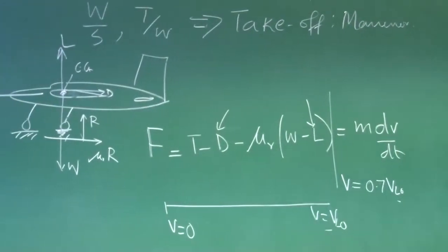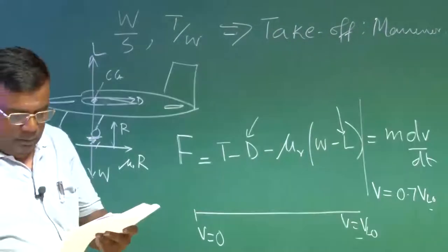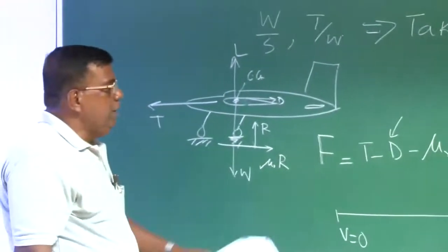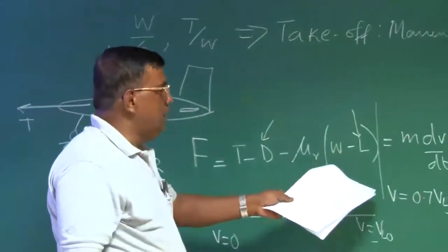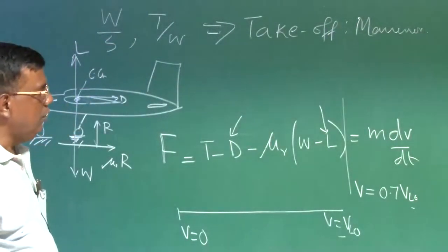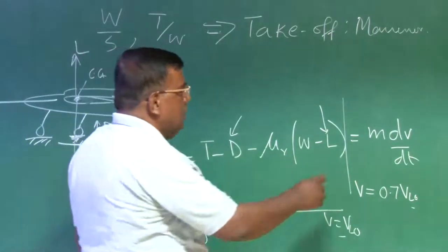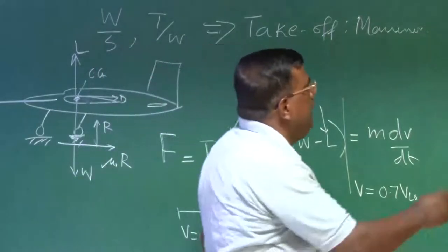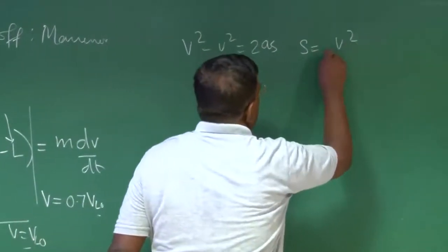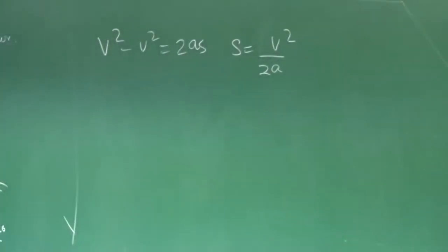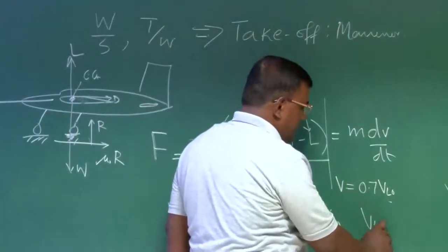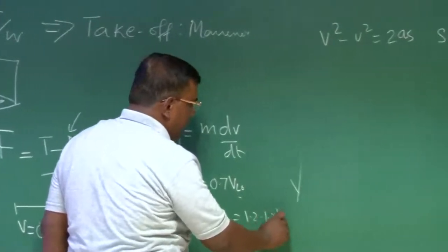Once he knows average acceleration and if it is correct, then he knows V square minus U square equal to 2As. So S equal to V square by 2A, where A is the average acceleration using this equation. Generally, it is seen that if I compute this aerodynamic force at 0.7V lift off, that is a good approximation to assume that I can use the concept of average acceleration for most of the aircraft.